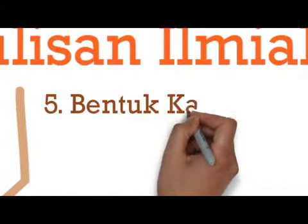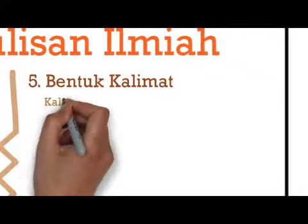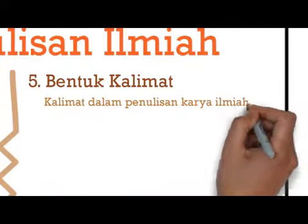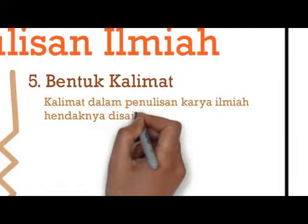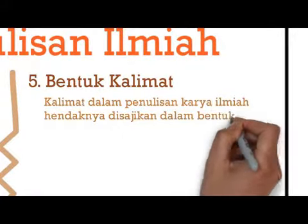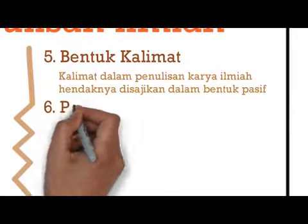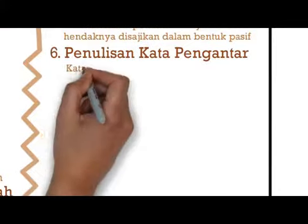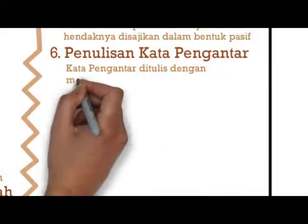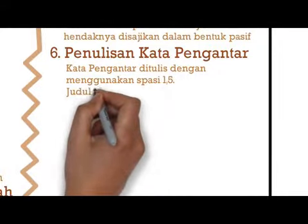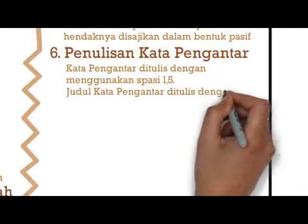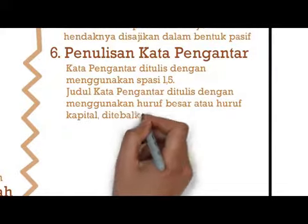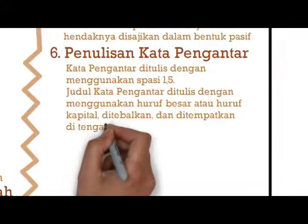Yang kelima bentuk kalimat. Kalimat dalam penulisan ilmiah disajikan dalam bentuk pasif, tidak boleh disajikan dalam perspektif orang pertama seperti saya, aku, dan lain-lain. Yang keenam ialah penulisan kata pengantar. Kata pengantar ditulis dengan menggunakan spasi 1,5. Judul kata pengantar ditulis dengan huruf kapital, ditebalkan, dan ditempatkan di tengah. Jarak antara judul dan isi kata pengantar adalah 2x2 spasi.